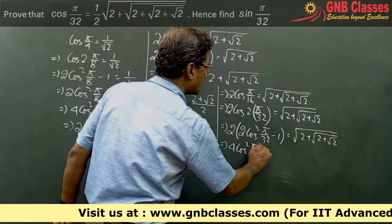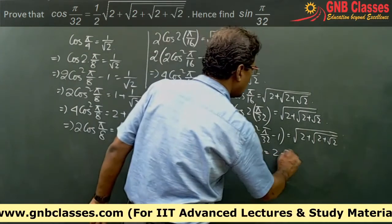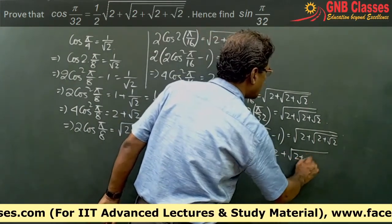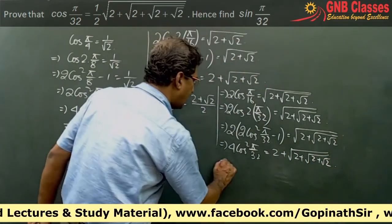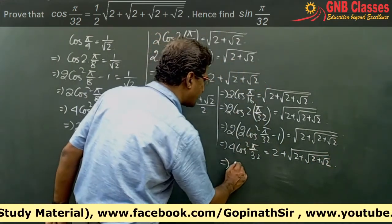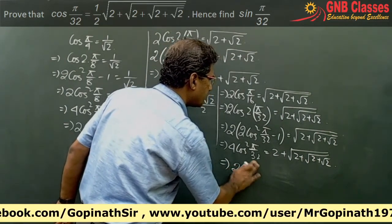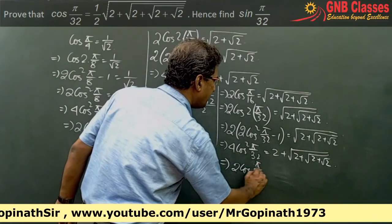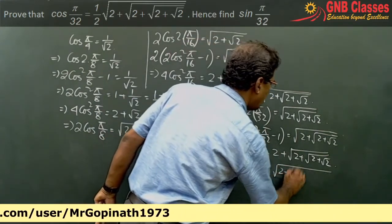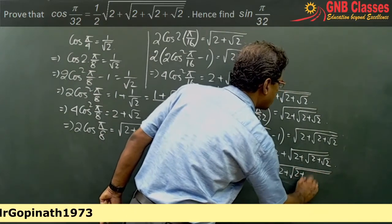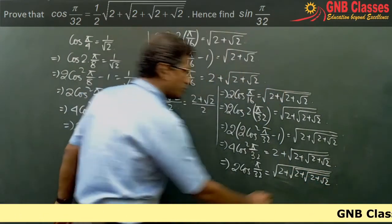So 4cos²(π/32) = 2 + √(2 + √(2 + √2)). Taking square root on both sides, we get 2cos(π/32) = √(2 + √(2 + √(2 + √2))). Proved.